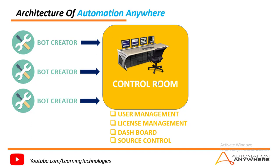There are two types of licenses available in Automation Anywhere: one is the Dev license and another is the Run license. With a Dev license, you can create, edit, and run the bot. Whereas with a Run license, you cannot edit anything — you can only run the bots.